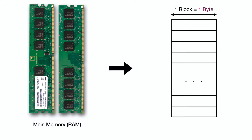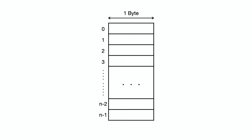RAM is divided into different blocks. Each block is one byte. These blocks are numbered 0, 1, 2, 3, and so on up to n-1. Every block has a unique number, and using that number we can identify the corresponding block. We call this number the address.